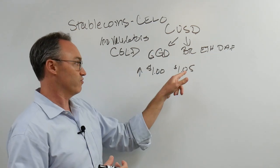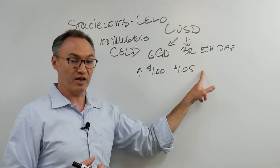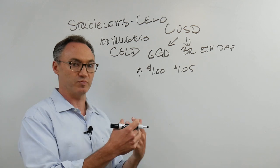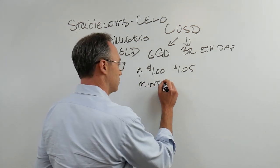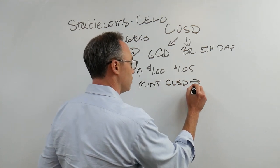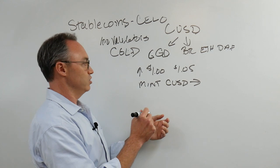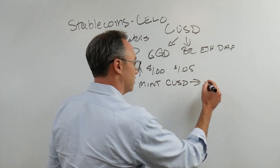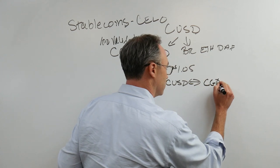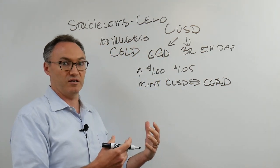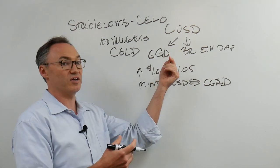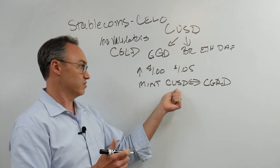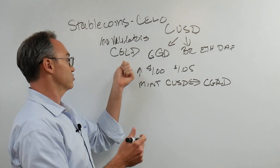The Celo protocol says, if we see that the value of CUSD is worth more than a dollar, that means we have to add supply. We have to mint more CUSD because there's too much demand. So we mint CUSD, put it out there in the market, and use it to buy CGLD back. It puts out CUSD and exchanges it for CGLD, Celo gold.